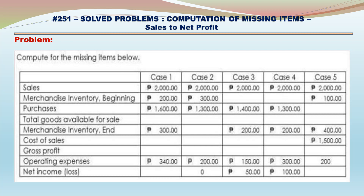Case 1 continued: Operating Expenses and Net Income/Loss are missing. Case 2: Sales – 2,000. Merchandise Inventory Beginning – 300. Purchases – 1,300. Total Goods Available for Sale and Merchandise Inventory Ending are missing.